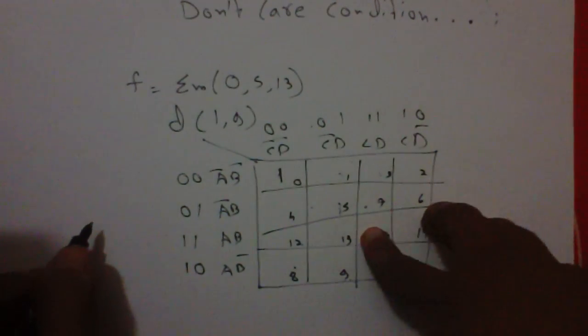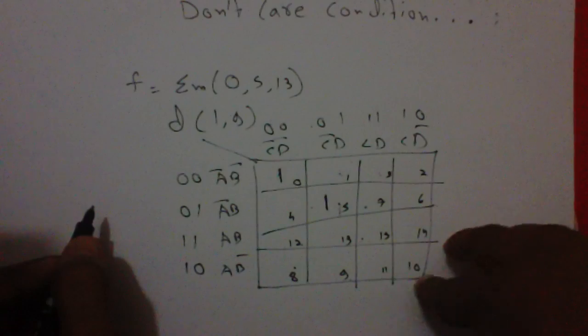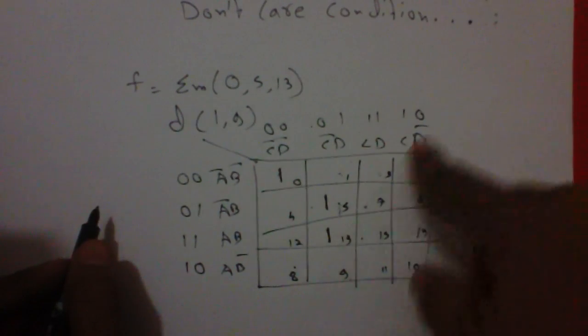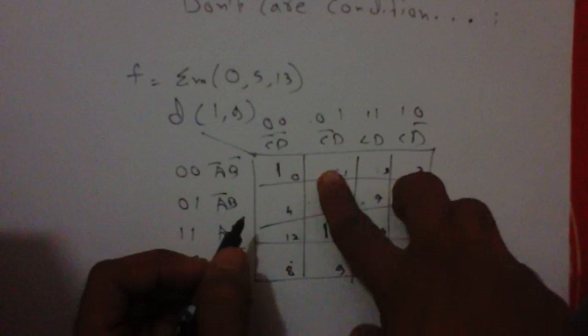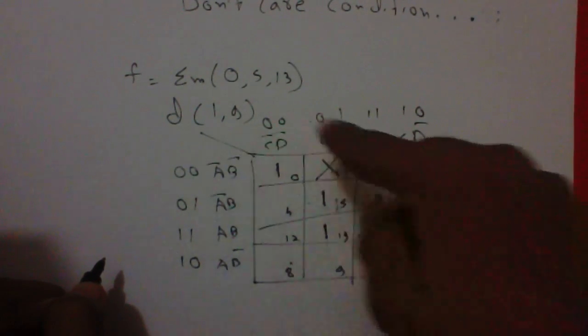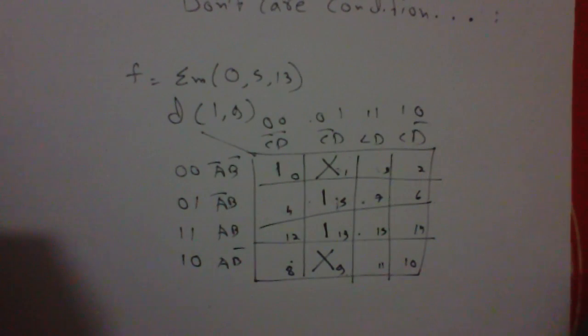5, second is 5, 1 here. Next is 13, 1 here. And don't care condition we denote in K-map as X. So first is 1, so X. Second is 9, X.